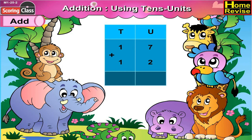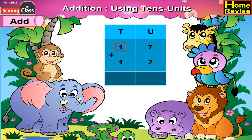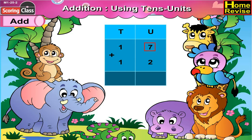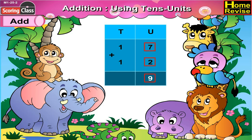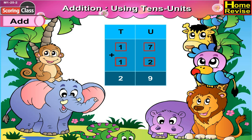In the next sum, under units we have 7 and 2, under 10s we have 1 plus 1. 7 plus 2 would be 9, 1 plus 1 is 2. So 17 plus 12 is 29.